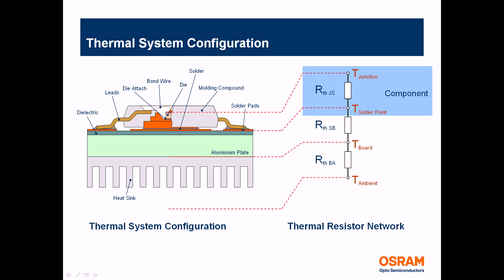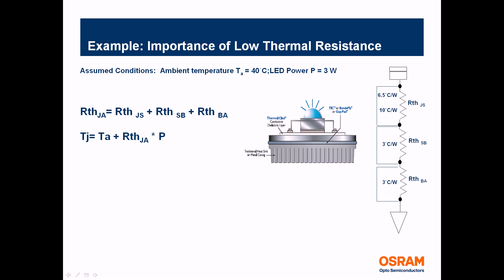The system can be broken down into three main parts: the LED component itself, the substrate, and the heat sink. The overall thermal resistance of each of these components can be added together like a series circuit resistor to get the total thermal resistance of the system.